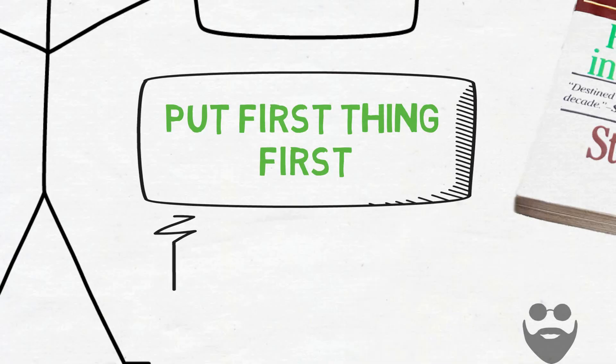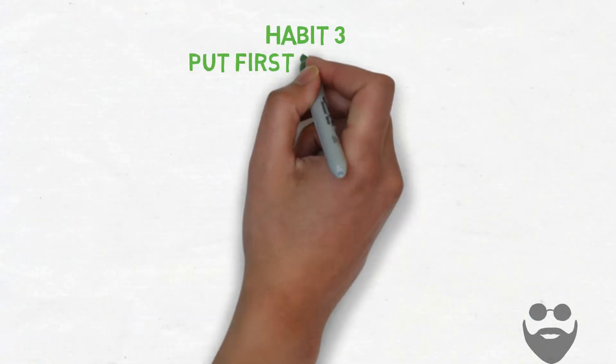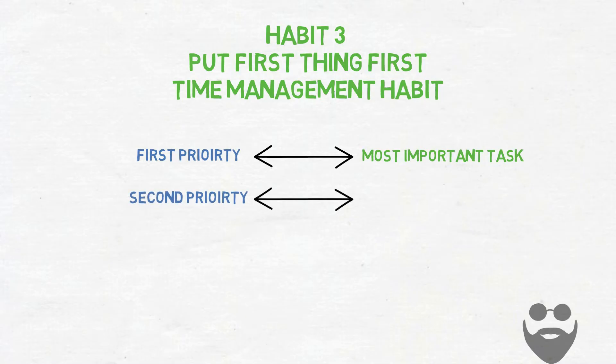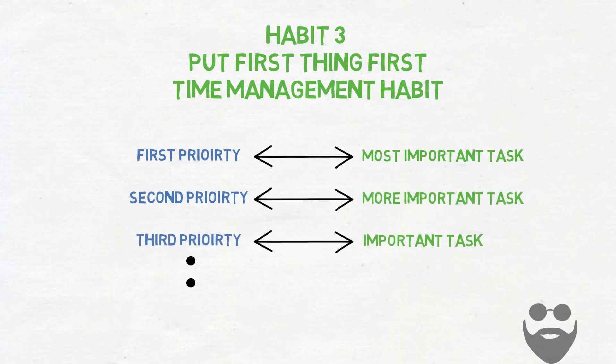Habit three is the time management habit. It means to put those things first which are more important. In other words, the activities that matter most should never be left to the mercy of activities that matter least.